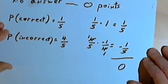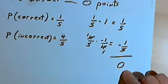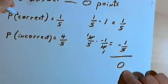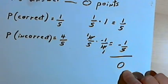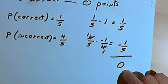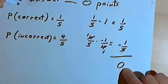We add one-fifth and negative one-fifth together and get zero. That's our expected value. It means that if you were to guess repeatedly with no idea what the right or wrong answers might be, you would, on average, neither gain nor lose any points. Your expected value for each of those guesses would be zero points.